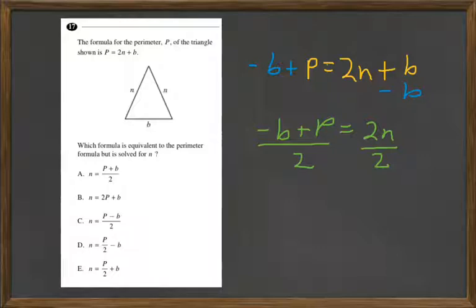And that leaves us with, I'll write the N on the opposite direction, N equals P, just to make sense, minus B all over 2. Is there an option that has that same equation?